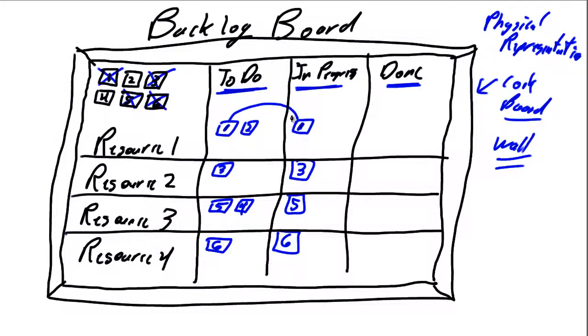But at this point in time, resource number one identifies that he or she has done all of the work that their skill set is going to allow them to do on story number one. Story number one is not yet complete.